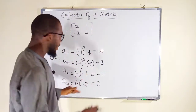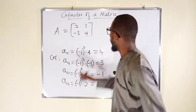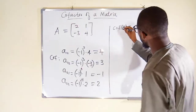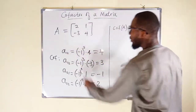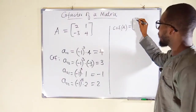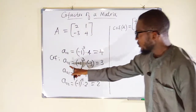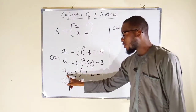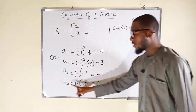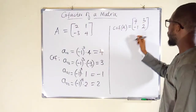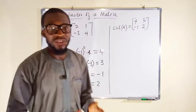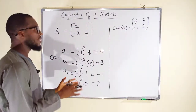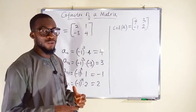Now we substitute back into their corresponding positions. The cofactor matrix of A is: A11 is 4 (first row, first column), A12 is 3 (first row, second column), A21 is negative 1 (second row, first column), and A22 is positive 2 (second row, second column). The cofactor matrix has the same dimension — this is 2×2 and the cofactors remain 2×2, but the elements are not exactly the same. This is how to find the cofactors of a 2×2 matrix.